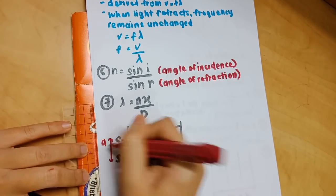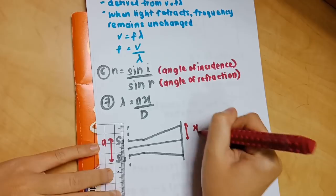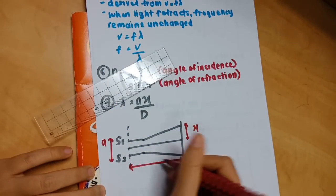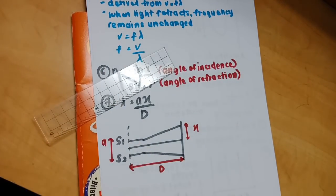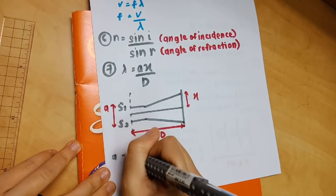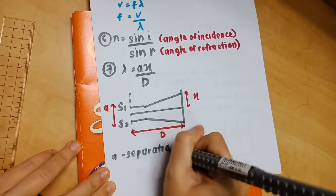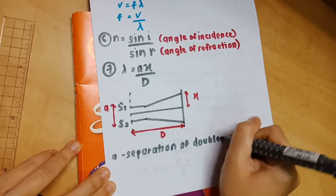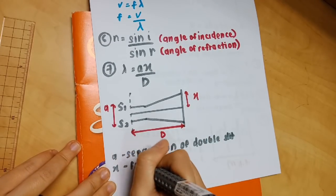It's important to know the meaning of a, d, and x. A stands for the separation of double slit or the distance between two light sources. X refers to the fringe separation, meaning the distance between two bright fringes or two dark fringes. D refers to the distance of the screen from the double slit.